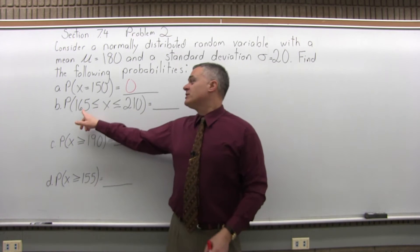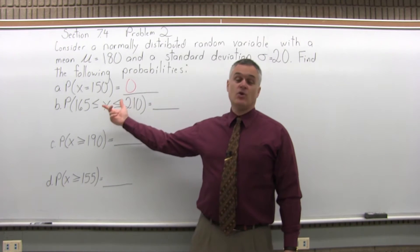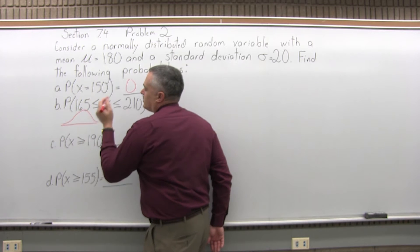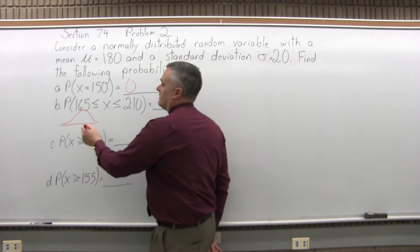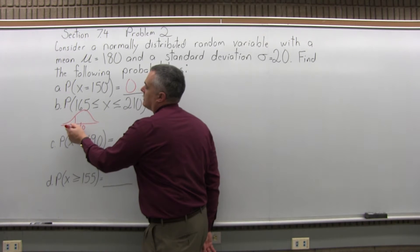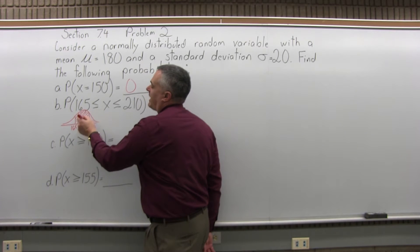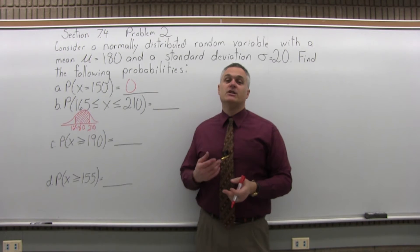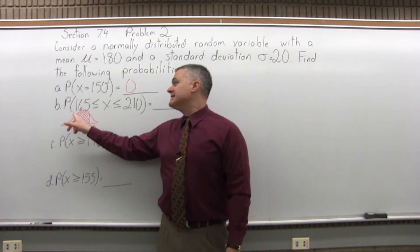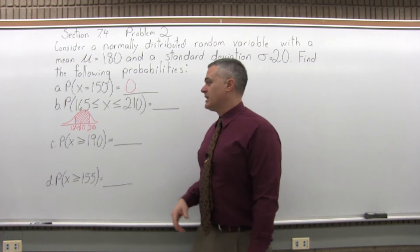Part B asks for the probability that 165 is less than or equal to X is less than or equal to 210 — in other words, the probability that X is between 165 and 210. Visually, you'd have a normal curve with the mean 180 in the middle, 165 a little to the left, and 210 a little to the right. This is an in-between question, so we find two chart values and subtract them. We find a Z-score for 165 and look it up, then find a Z-score for 210 and look it up, then subtract the two results.